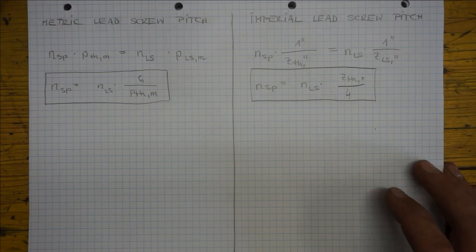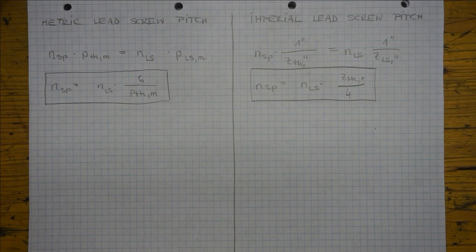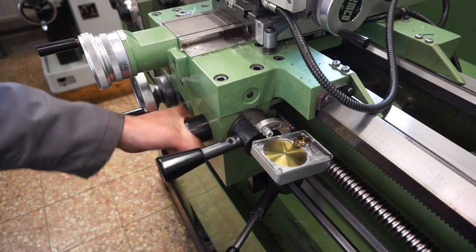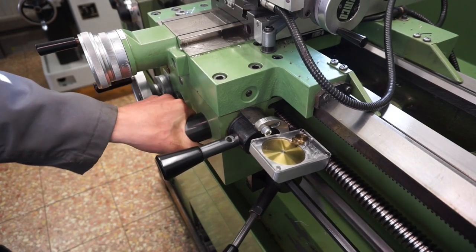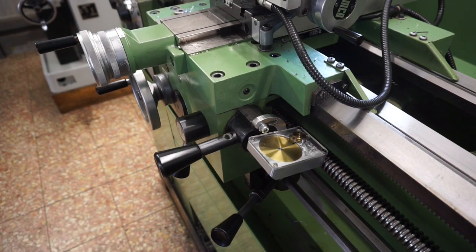But how does this help us with thread cutting? First let me use the threading condition to prove to you why we can open the clasp nut for a few particular thread pitches like I've shown in the video's intro for 1 mm pitch I think. Naturally we can disengage from the clasp nut at any situation. On the other hand we cannot re-engage at any situation. The lead screw must turn one or a few complete revolutions until the clasp nut can be re-engaged again.